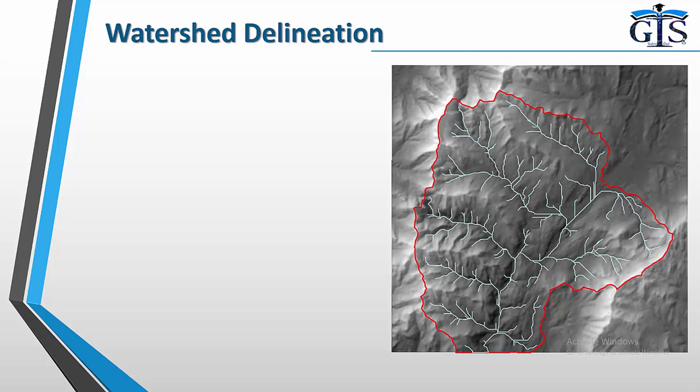This is a very important analysis which is being used in urban planning, environmental science, natural resource management, and many advanced GIS related work. In this lecture we will learn what watershed delineation is and understand all of the analyses used in it. After this lecture we will do watershed delineation practically in our next lecture. Now let's start the class.